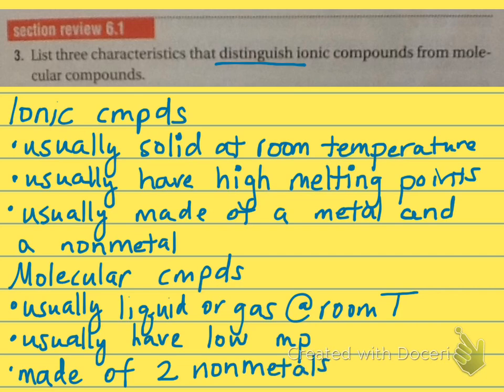So that's how you can tell one from another. The really important one — the one we're going to use a lot — is that an ionic compound is made of a metal and a non-metal, while a molecular compound is made of two non-metals. That'll probably be our most important way to tell an ionic from a molecular compound.